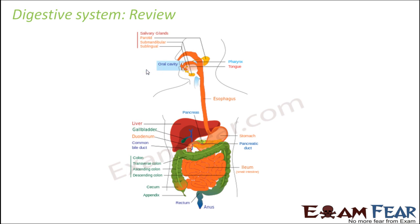The story of the digestive process starts with food entering our body through the mouth, from the mouth it enters into the oral cavity. In the oral cavity, teeth, tongue, and saliva all three play a very important role in breaking down food into simpler particles. Almost 30% of the carbohydrates are also hydrolyzed in the oral cavity by salivary amylase.